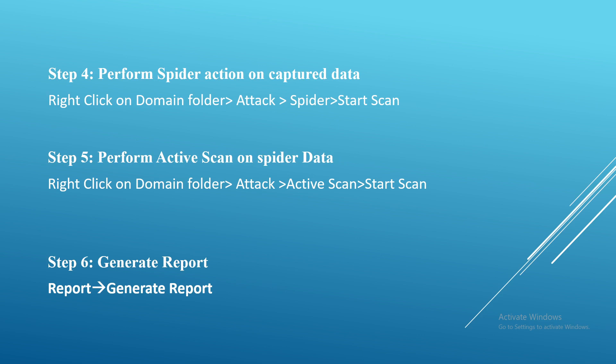After completing the spidering action, go to step 5: perform the active scan by clicking the site tree, then Attack > Active Scan, and start the scan. After the active scan completes, you can generate the report by clicking Report > Generate Report. The report can then be given to the project manager.